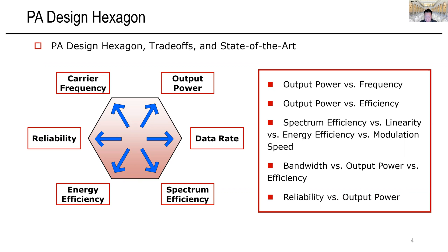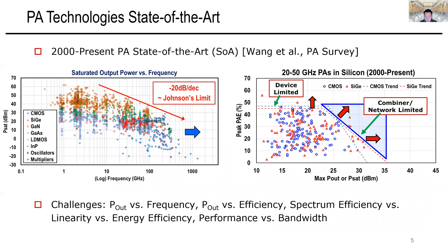This level of complexity makes PA design both challenging and also full of innovation opportunities. To give the audience a perspective of practical PA performance capabilities as well as the state-of-the-art, we will use the online power amplifier survey developed by my research group to give a performance overview of power amplifiers reported from 2000 to now. Using these PA performance data, we will clearly see the major PA design trade-offs, such as output power versus frequency, output power versus efficiency, spectrum efficiency versus linearity versus energy efficiency, and performance versus bandwidth.